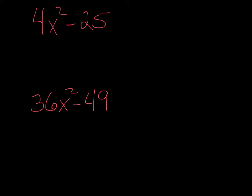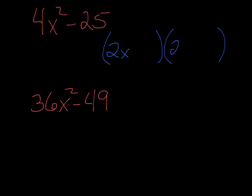Is this difference of squares? Can you take the square root of the first term? Can you take the square root of the second term? Is there a subtraction sign in between them? If the answer is yes to all those questions, then it is difference of squares. Set up two sets of parentheses. Square root of 4x squared is 2x — write that in both parentheses. Square root of 25 is 5. One gets a plus, one gets a minus.